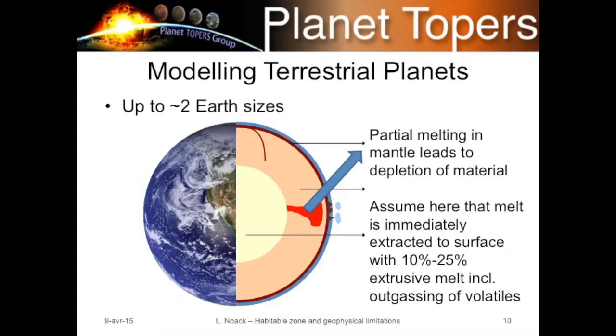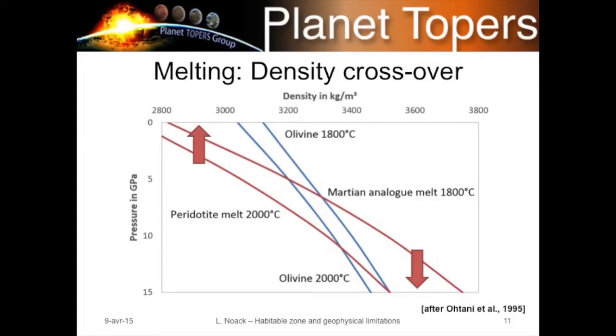Typically not all material melts, so we use the term 'depletion' — partial depletion of the mantle in melt rising to the surface. Not all of the melt rising towards the surface is actually extracted via volcanism; we also have intrusive magmatism. For the evolution of a planet's secondary atmosphere, we only need to look at the extrusive melt. There is also the problem of the density crossover — looking at the density of olivine, the main upper mantle material, over pressure, density increases with depth as the mantle is compressed.